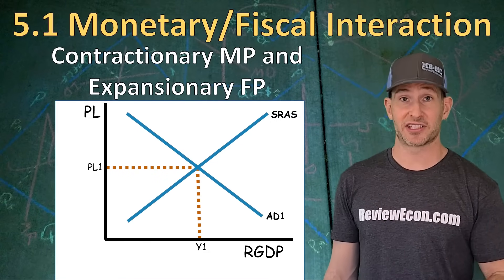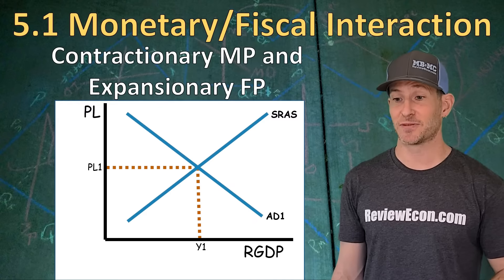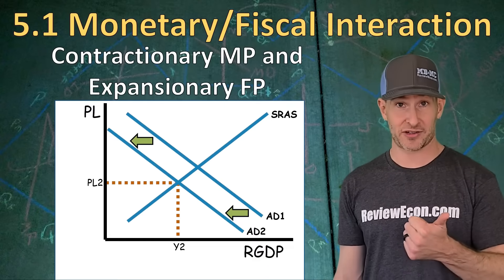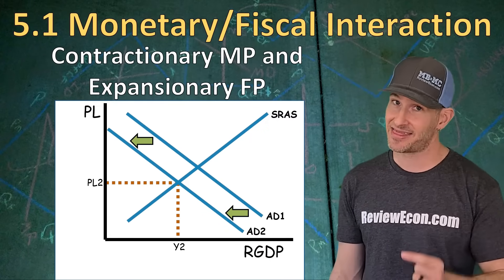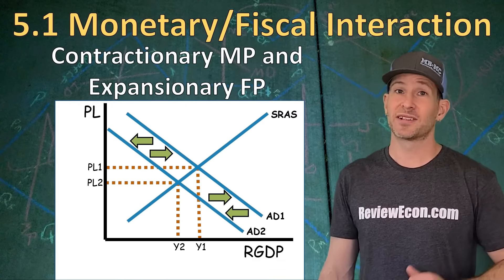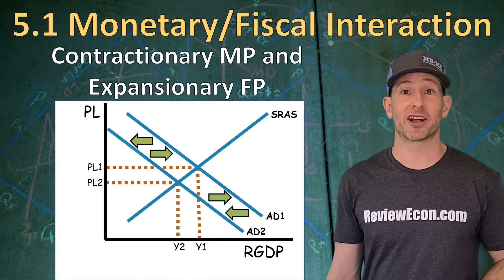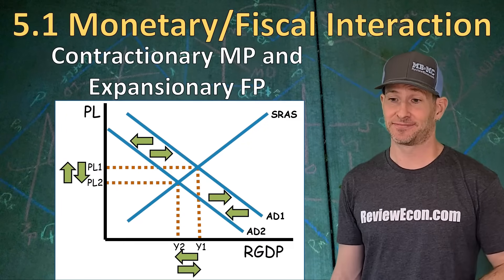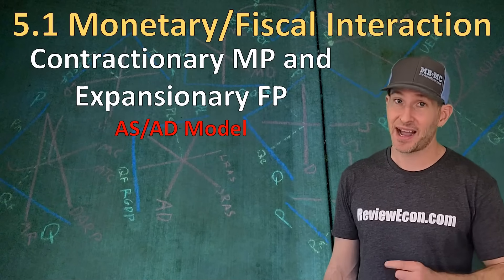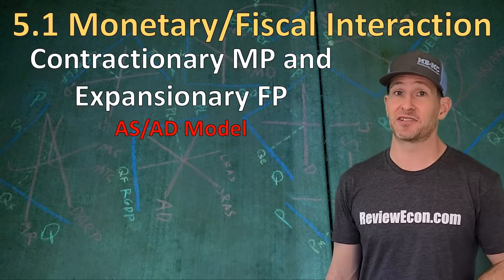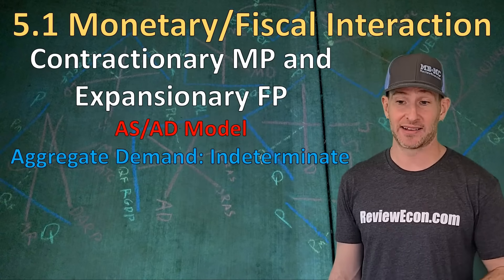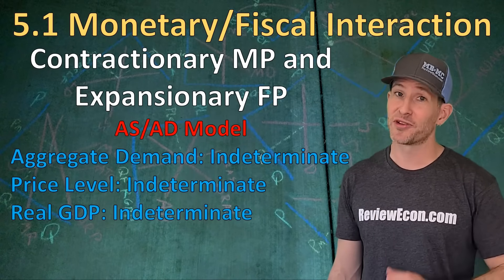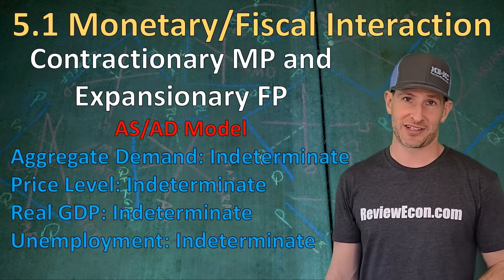The contractionary monetary policy will increase the interest rate, decreasing gross investment, and that will shift the aggregate demand curve to the left. The expansionary fiscal policy will increase government spending or decrease taxes, and that will increase the aggregate demand curve. So what's the net effect? Since the aggregate demand curve is both shifting left and right, we can't really determine the price level or the real output. The combined actions of monetary and fiscal policy working in opposite directions means that aggregate demand curve is indeterminate. As a result, the price level is also indeterminate and the real output is indeterminate.